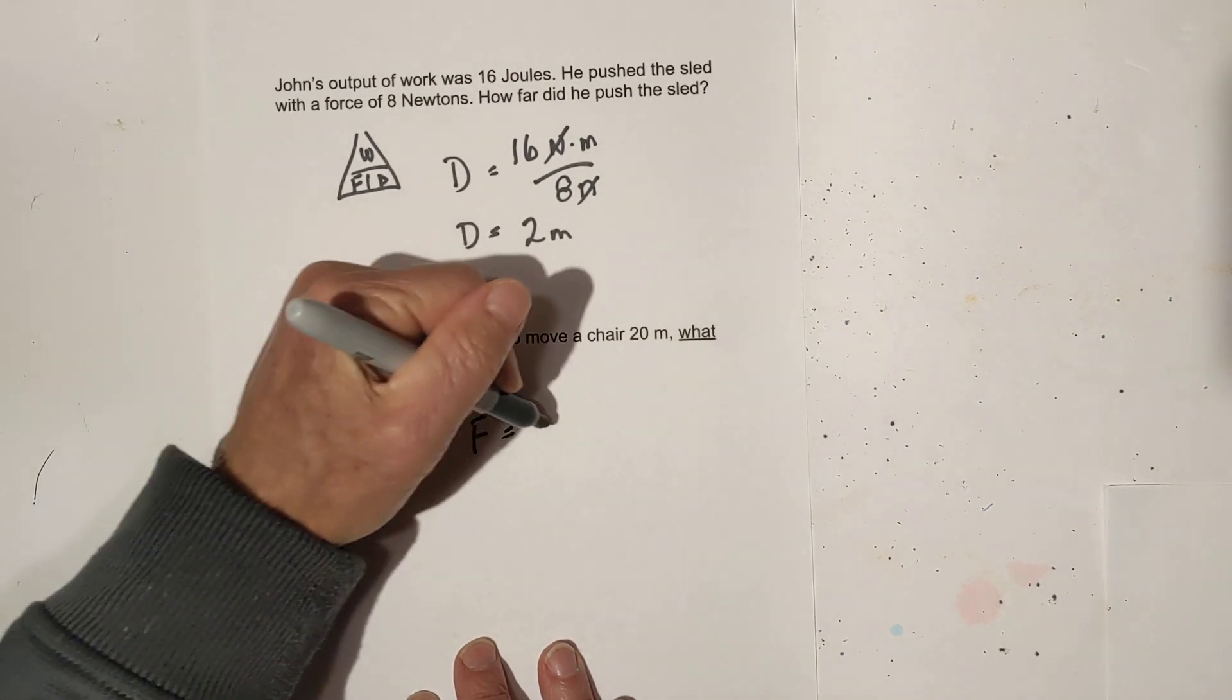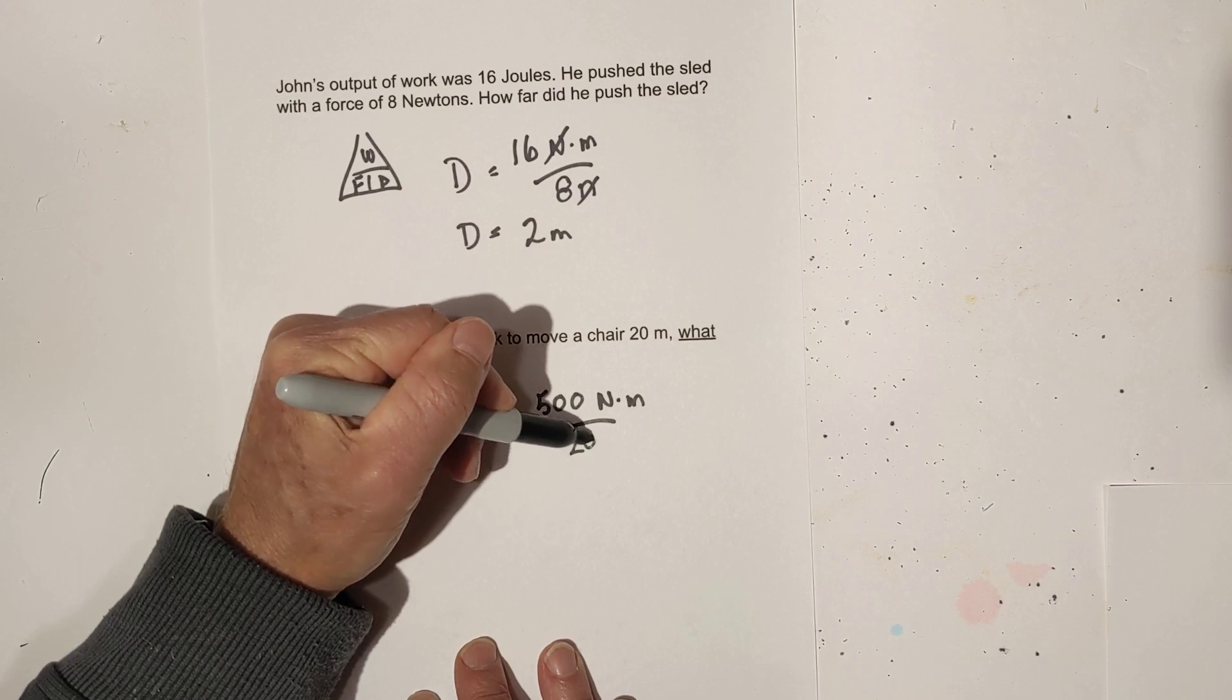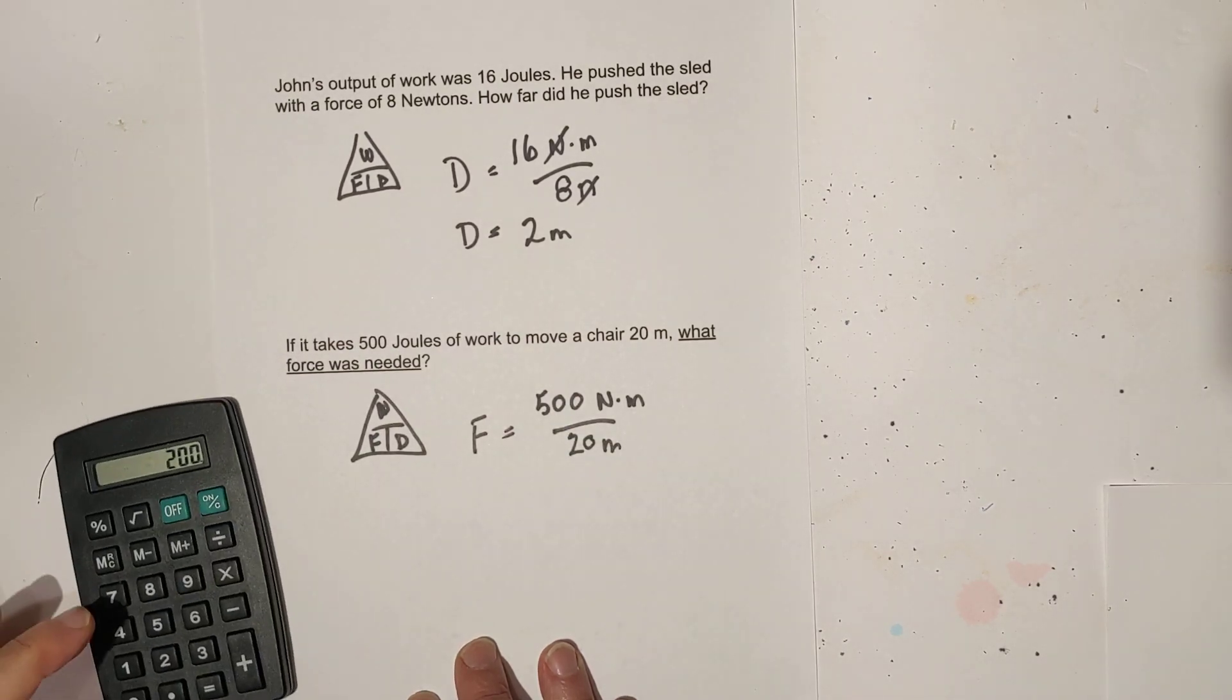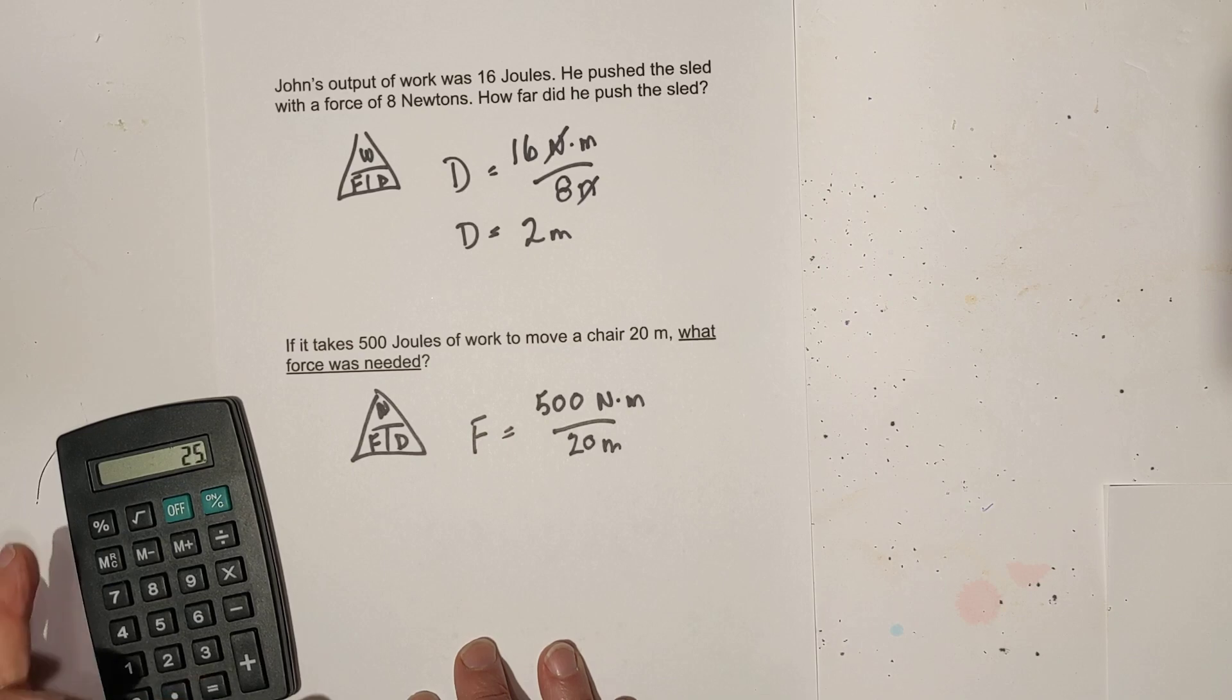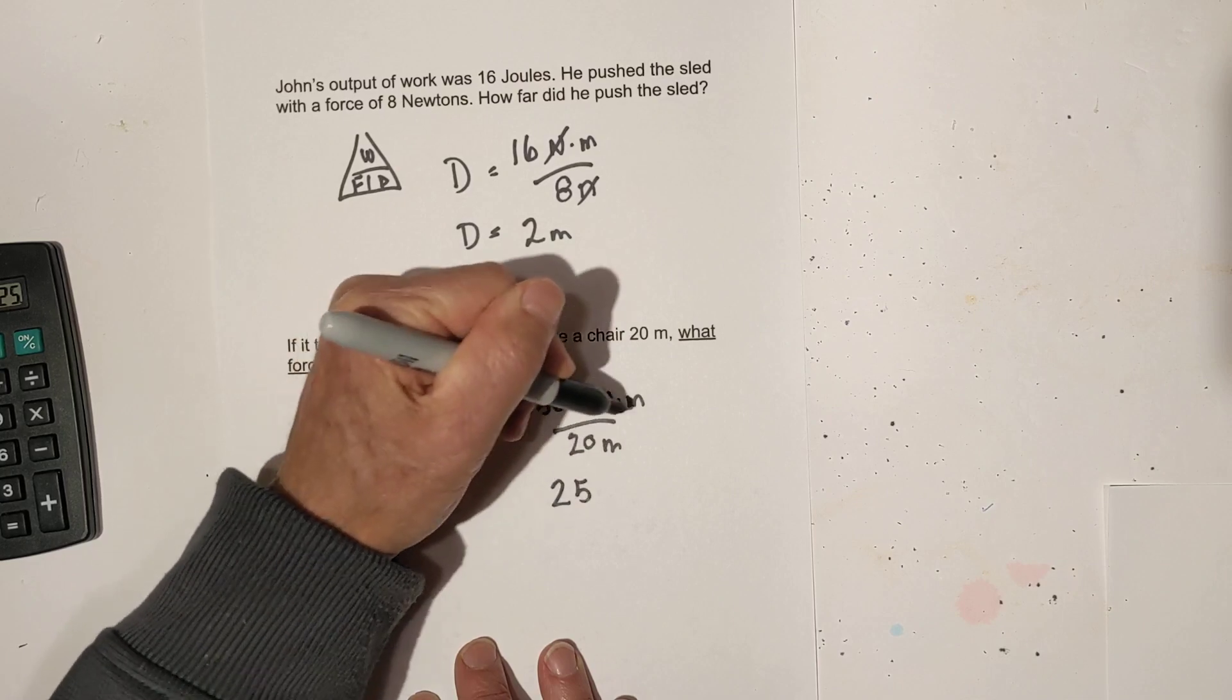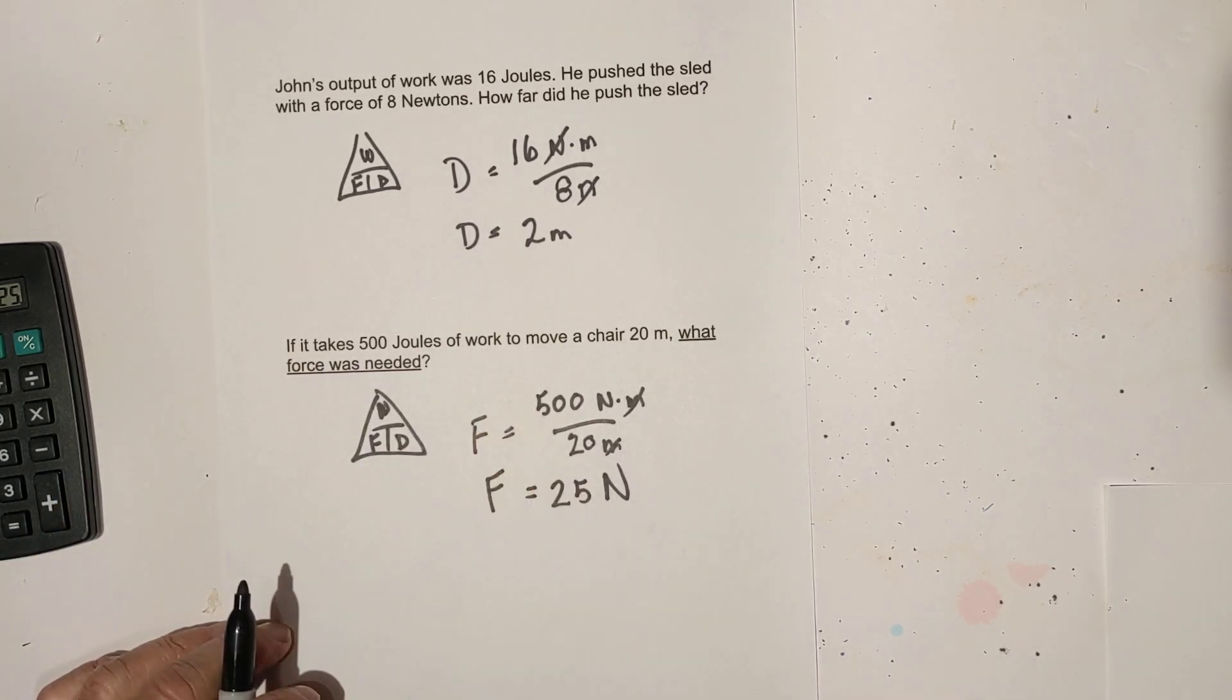That's work divided by distance. Instead of joules I'm going to write newtons times meters and divide that by 20 meters. 500 divided by 20 equals 25 newtons. I had a mental lapse there thinking it wouldn't divide evenly, but 500 divided by 20 is 25.